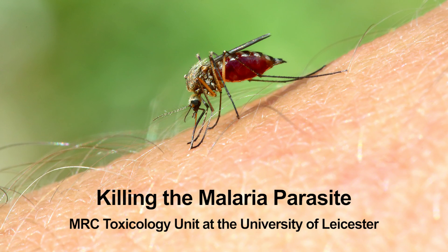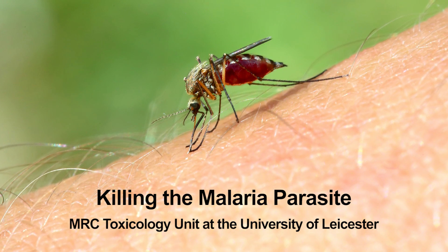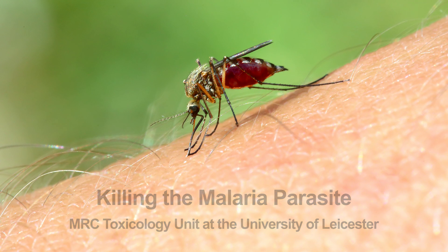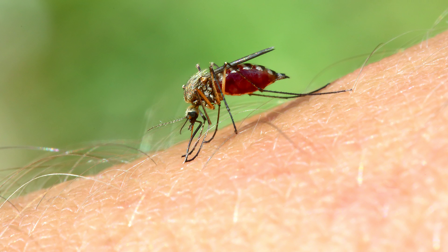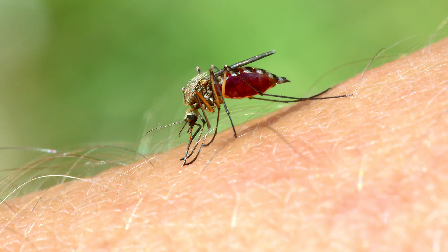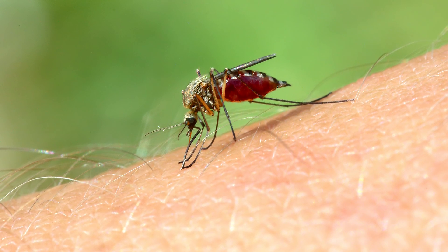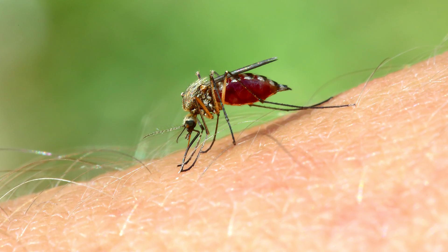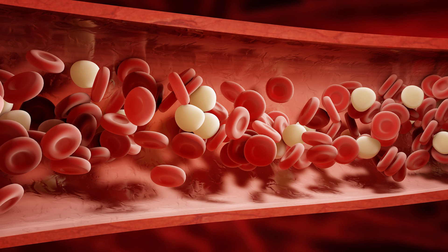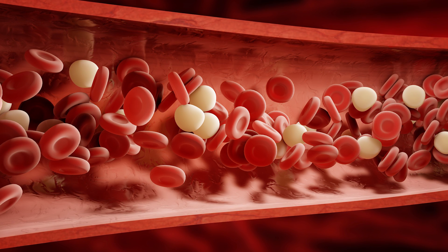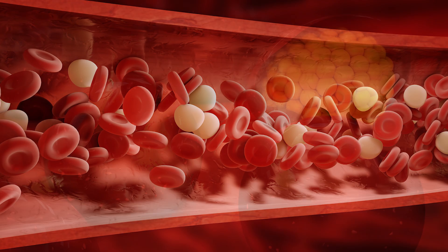Malaria is caught from the bite of a mosquito, which injects the parasite into our bloodstream. The parasite then finds its way first into our liver, where it grows with no adverse effect on the person. Then it bursts out of the liver — thousands, millions of these parasites — into our bloodstream, where the parasite invades red blood cells, the cells that carry oxygen around our blood.